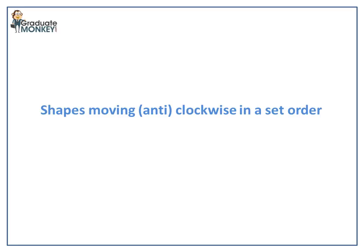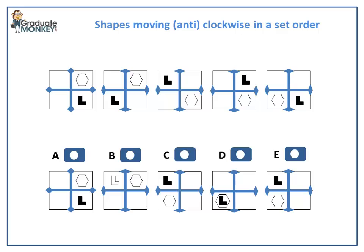Let's take a look at the first one where there is a set order in which the shapes move in a sequence. Here is the first type of sequence of five shapes. The sequence develops from left to right.